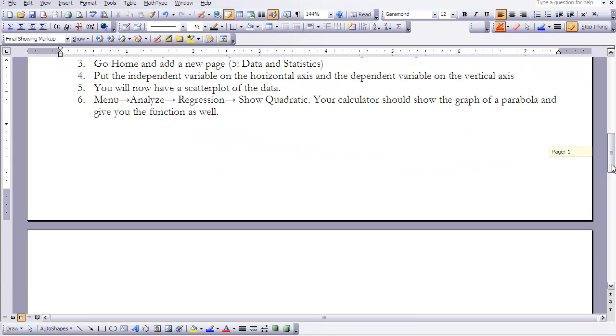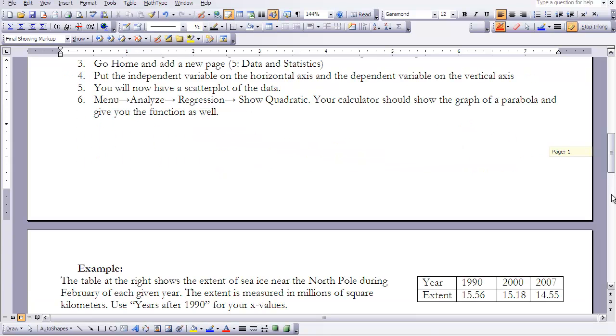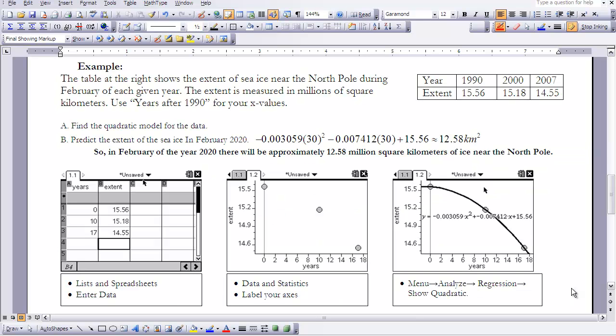So let's take a look at this next problem here. This problem that we're going to look at deals with sea ice near the North Pole during February of each given year. So what they've done is taken measurements in 1990, 2000, 2007, and found that there is approximately 15.56 million square kilometers of ice near the North Pole in 1990, 15.18 in 2000, and 2007, it's 14.55. So we notice it's going down a bit each year.